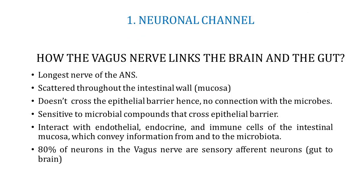The longest nerve of the autonomic nervous system — the vagus nerve — links the gut and the brain and is scattered throughout the intestinal wall. Vagus nerve does not cross the epithelial barrier, hence it has no direct connection with the microbes. However, vagus nerve is very sensitive to microbial compounds that cross the epithelial barrier. Also, vagus nerve interacts with the endothelial, endocrine and immune cells of the intestinal mucosa, which conveys information from gut to the brain and brain to the gut microbiota.